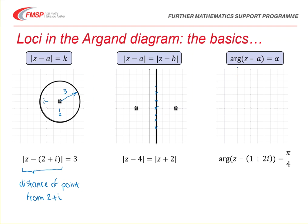In the third example, I've got the argument of z minus a is equal to some angle alpha. In my example, I've got the argument of z minus 1 plus 2i is equal to pi over 4. You should recognise that this is a half line beginning at the point 1 plus 2i at an angle pi over 4 to a horizontal baseline. Remembering that the point 1 plus 2i itself is not included in the line, because at that point the argument of z minus 1 plus 2i is undefined.